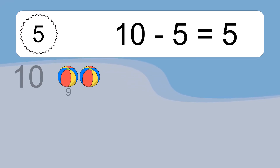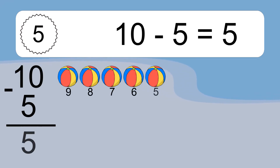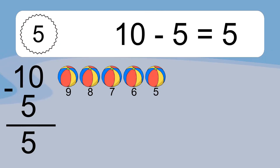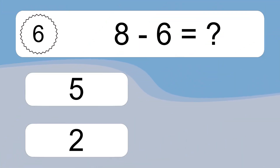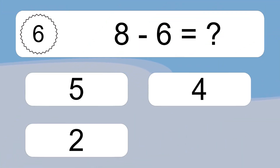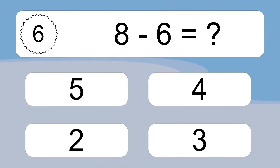10 minus 5 equals what? 10 minus 5 equals 5. Let's count it: 9, 8, 7, 6, 5.